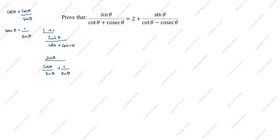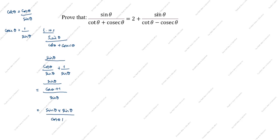You see the denominator — sin θ is common. So we take sin θ as common: cos θ plus 1. The numerator is sin θ. This sin θ goes up. So we write sin θ into sin θ divided by (cos θ plus 1). Next step: sin²θ divided by (cos θ plus 1).